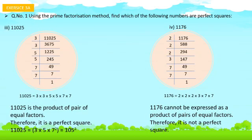Let's do Exercise 3, Question 1: Using the prime factorization method, find which of the following numbers are perfect squares. Let's take 11,025. Its prime factors are 3 × 3 × 5 × 5 × 7 × 7. These factors all occur in pairs, so 11,025 is a perfect square.